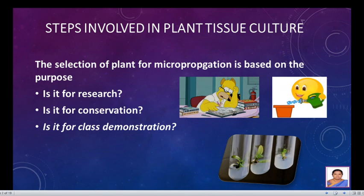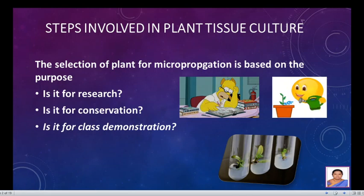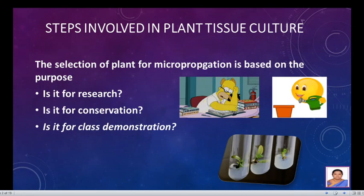We are all familiar with the steps of micropropagation. The selection of plant for micropropagation is based on the following factors: Is it for research? Is it for conservation? Or is it for class demonstration? If it's for research, it depends on the type of research being undertaken and its outcome. Someone may be interested in mass production of the plant to extract a metabolite or induce a new metabolite formation. In such a case, the plant may be selected based on its medicinal property, seasonal availability, use in traditional medicine, etc. The selection of plant for research requires a thorough literature survey.